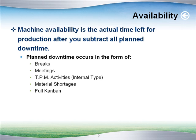Let's talk about machine availability for just a minute. Machine availability is the actual time left for production after you subtract all planned downtime. Planned downtime really comes in a few different forms: breaks are planned, meetings are planned, TPM activities are planned — especially the internal type, because you actually have to shut down the machines to do them. There's also material shortages and maybe full Kanbans. You may not think this is planned downtime, but really what it represents is a failure to plan, or other constraints going on in your plant. This does not mean your machine was not available, and that's a key differentiator.